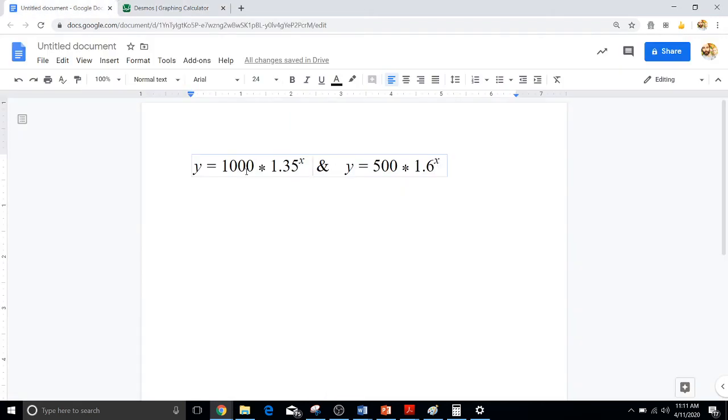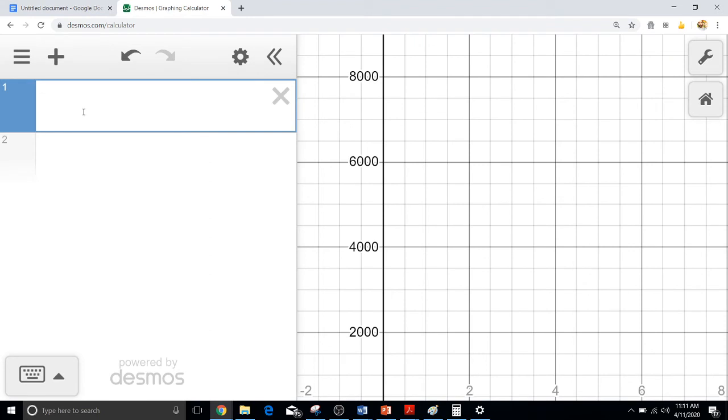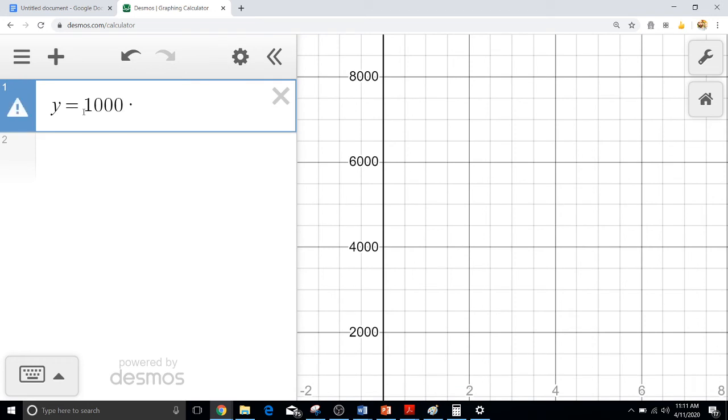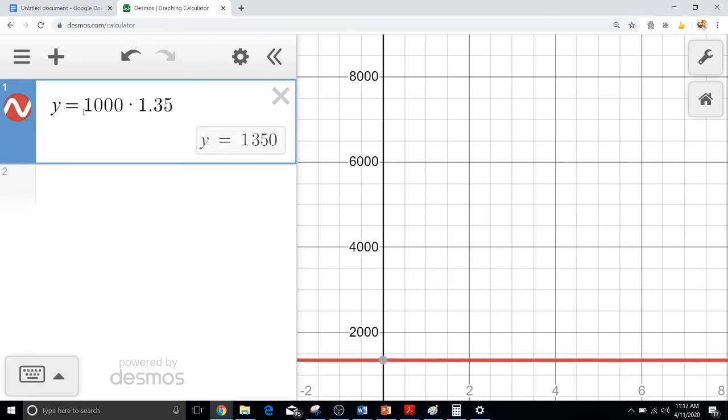Now remember, the first one is 1,000 times 1.35 to the power of x, so let's type that in: y equals 1,000 times 1.35, and now what we need to do is take it to the power of x. Remember we can do that by hitting shift 6 and x.